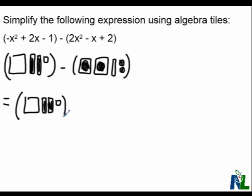So, let's take the negative sign, or subtraction, let's turn it into a positive, and let's flip each tile that's inside of this polynomial bracket here. So here we go: x squared positive becomes negative x squared, negative x becomes positive x, and our positive two unit tiles become negative unit tiles.